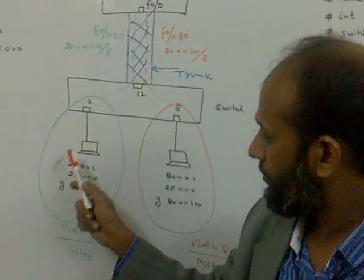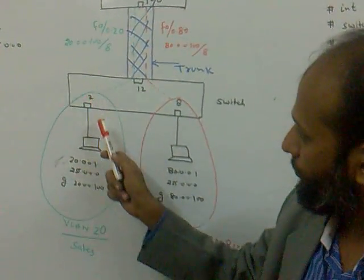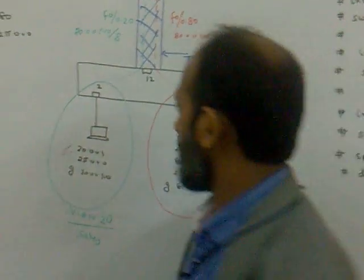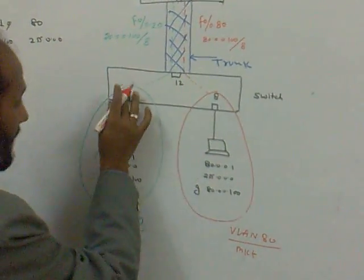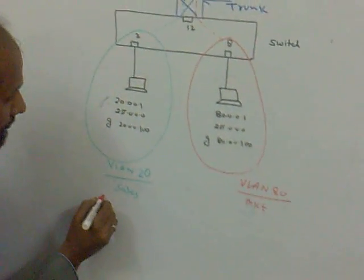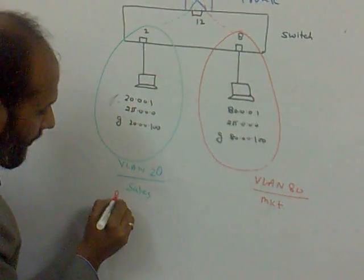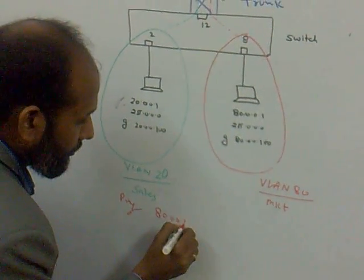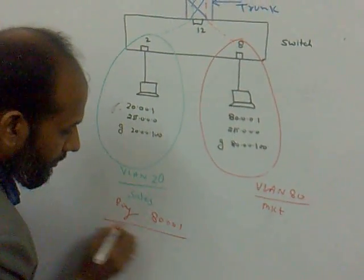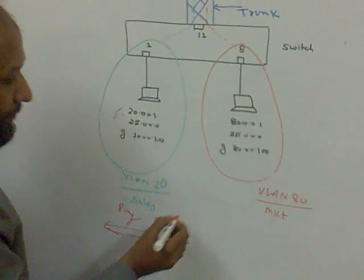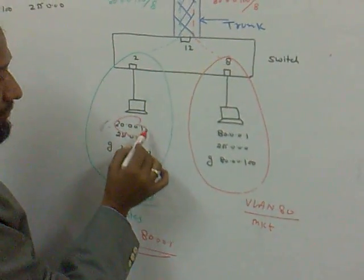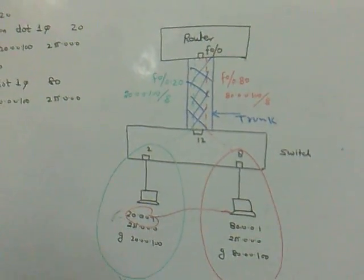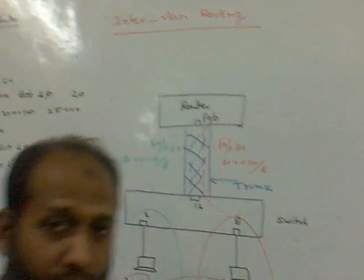After configuration on the router and switch, go to the PC attached to port number 2 and apply the ping command. Ping 80.0.0.1. If you are getting a reply, it means our router is working correctly for the inter-VLAN routing concept. Thank you so much.